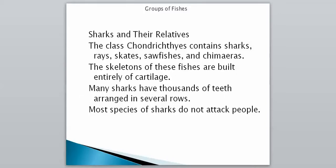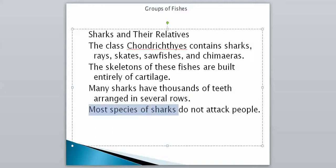Our second group is sharks and their relatives, known as class Chondrichthyes, which means having cartilage. This group contains sharks, rays, skates, sawfishes, and chimeras. Their skeletons are built entirely of cartilage — no bones. Many sharks have thousands of teeth arranged in several rows, so if a shark loses a tooth, another is already ready to move into place. Despite what you see on Shark Week, most species of sharks do not actually attack people — it's a rare occurrence.